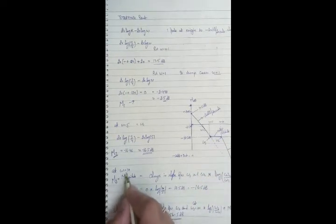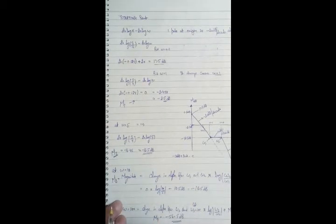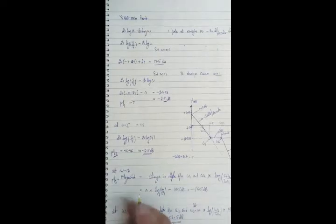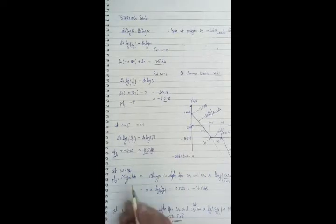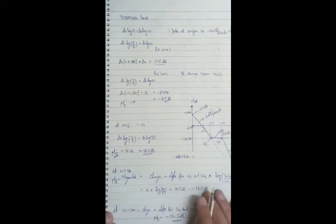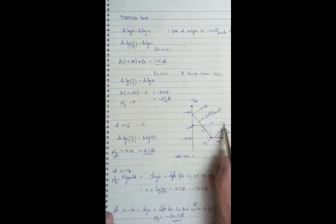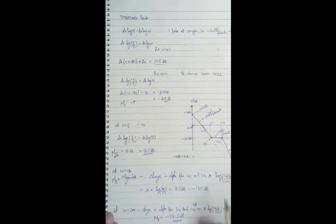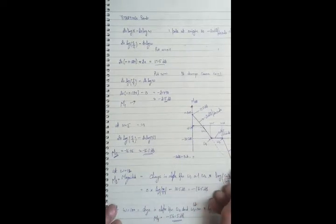At ω = 10 I have complex poles. Since there are two poles, the slope contribution is −40 dB/decade. I mark the point at ω = 10 on the current straight line — this is the starting point for the −40 dB/decade slope. Multiplying by 10 gives ω = 100, where I mark the second point for this segment of the Bode plot.